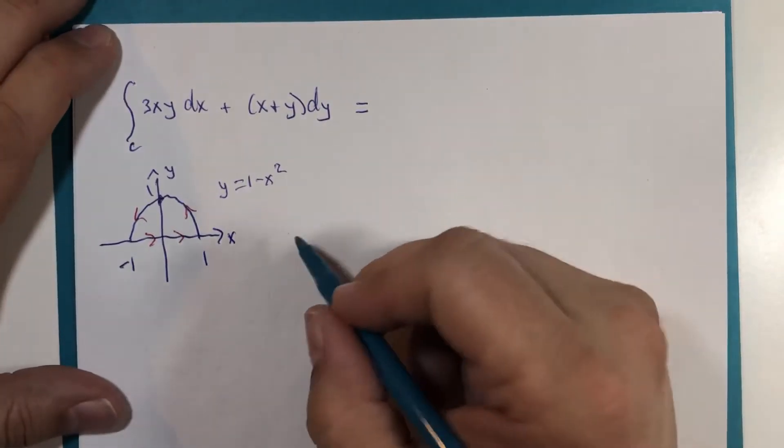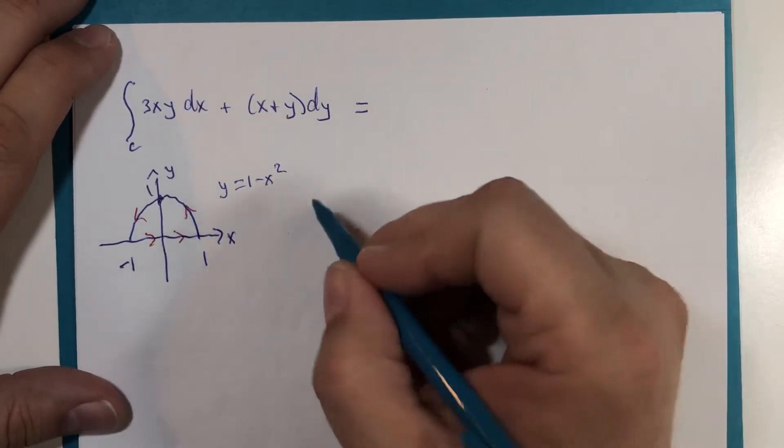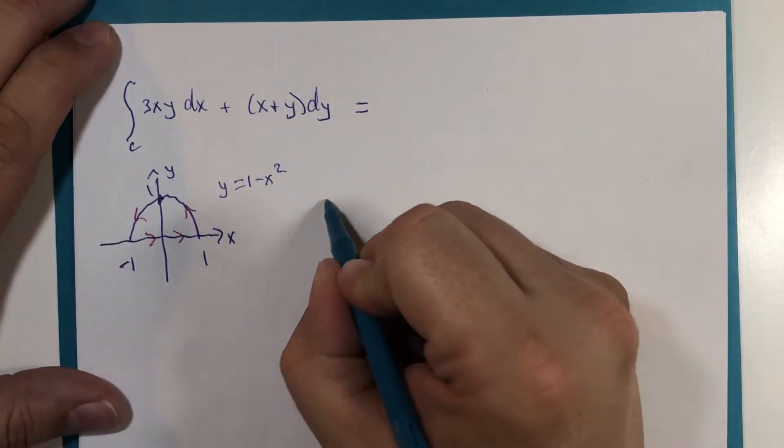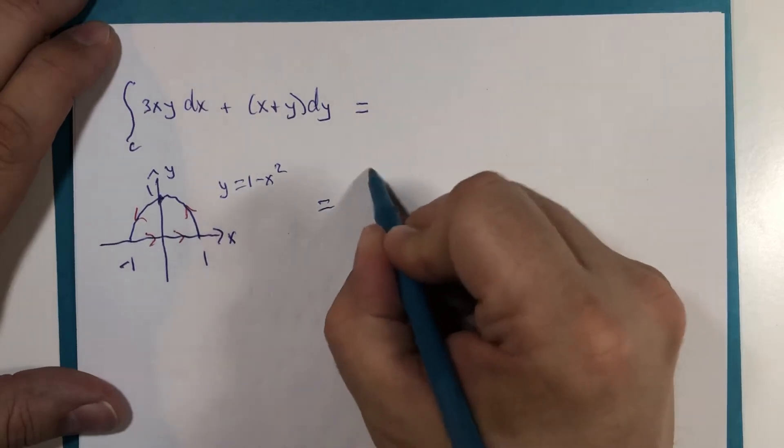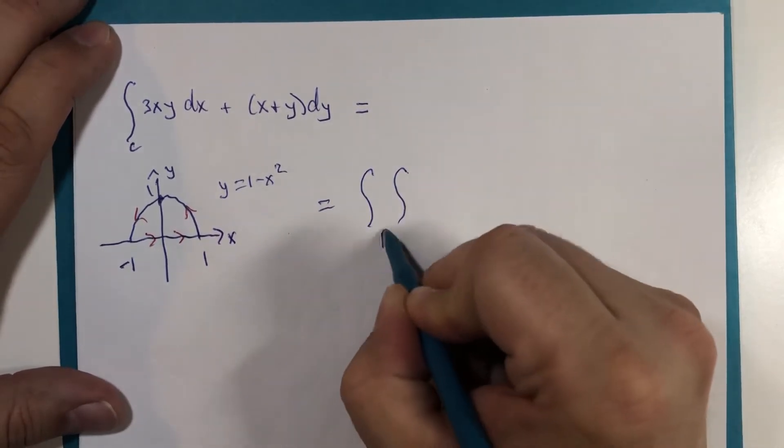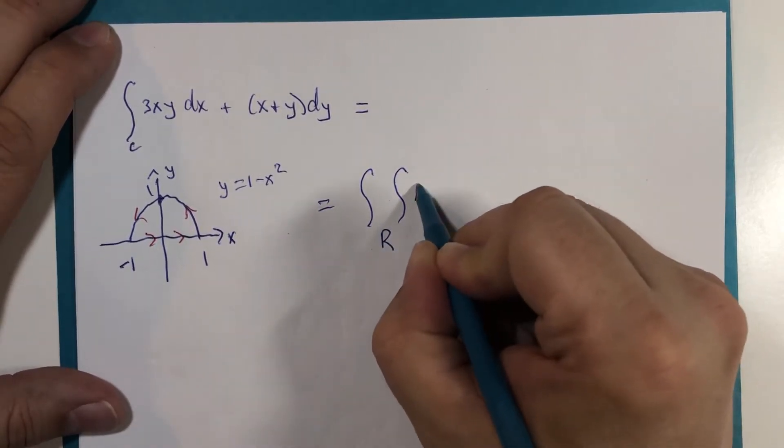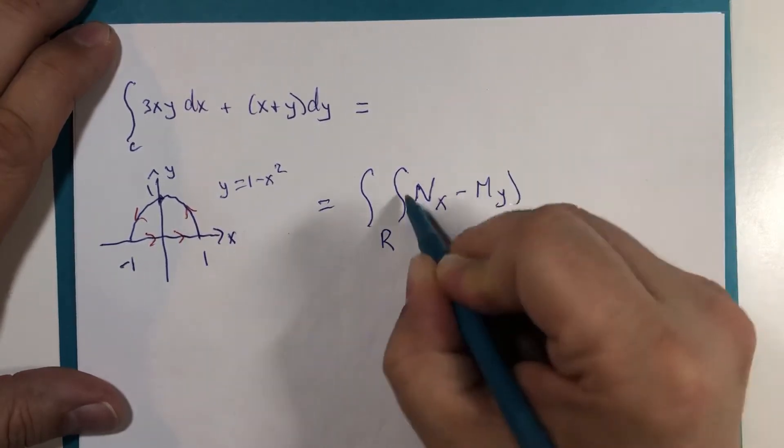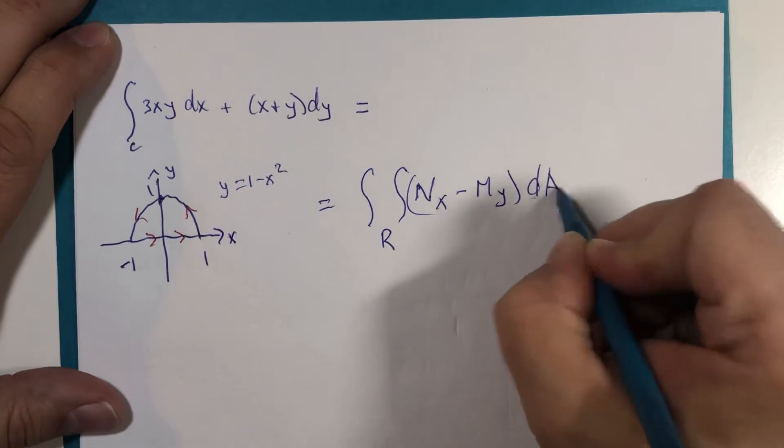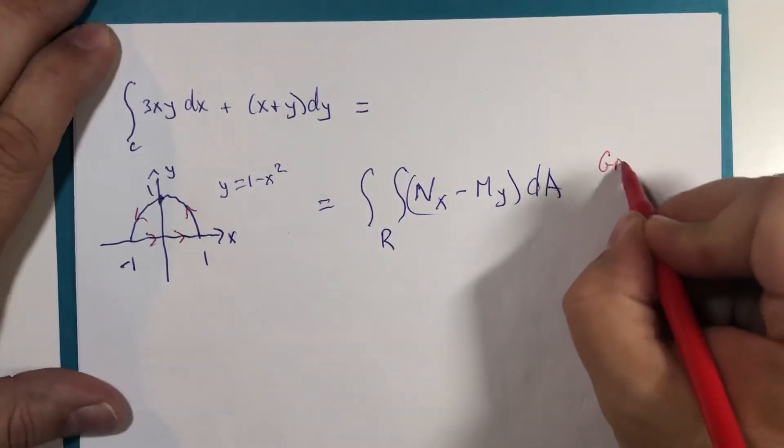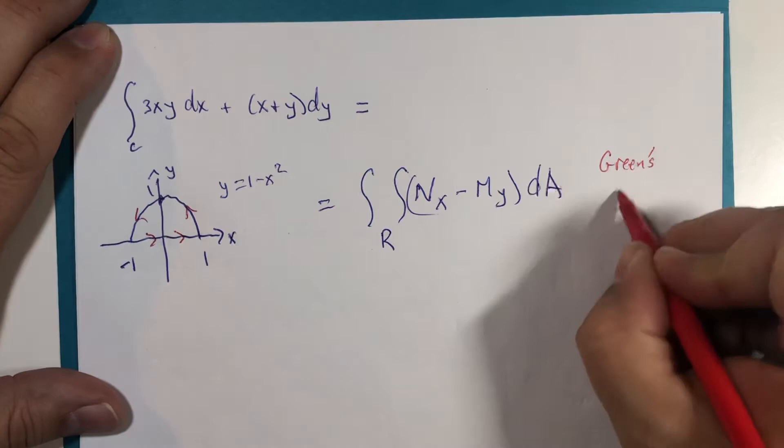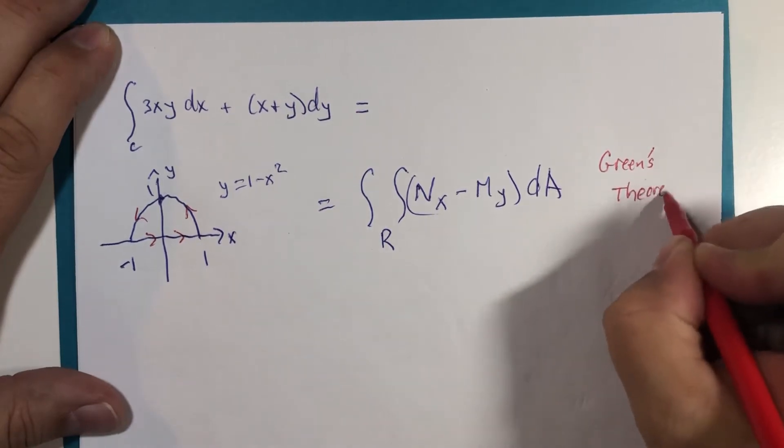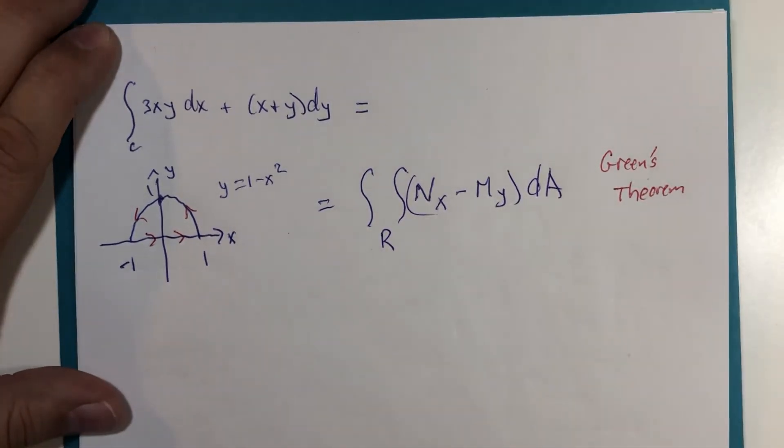So, this becomes our Green's Theorem, n with respect to x minus m with respect to y dA. So, this is Green's Theorem, and we have our region here.